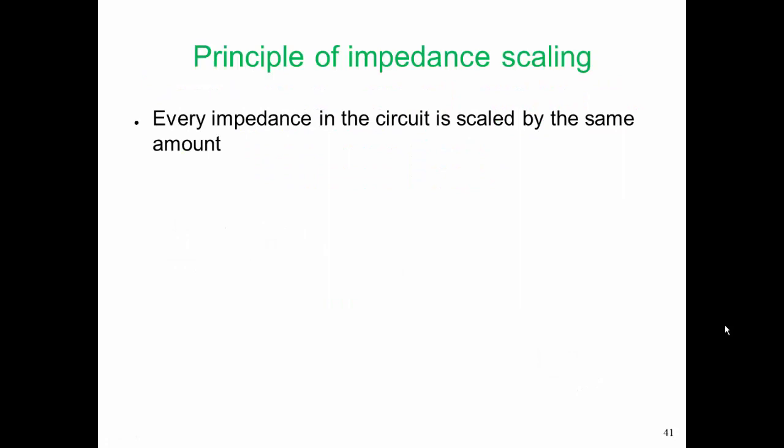The principle of impedance scaling is that we want every impedance in the circuit to be scaled by the same amount. So to go from 1 ohm to 50 ohm, we need to increase the value of the resistors by a factor of 50.